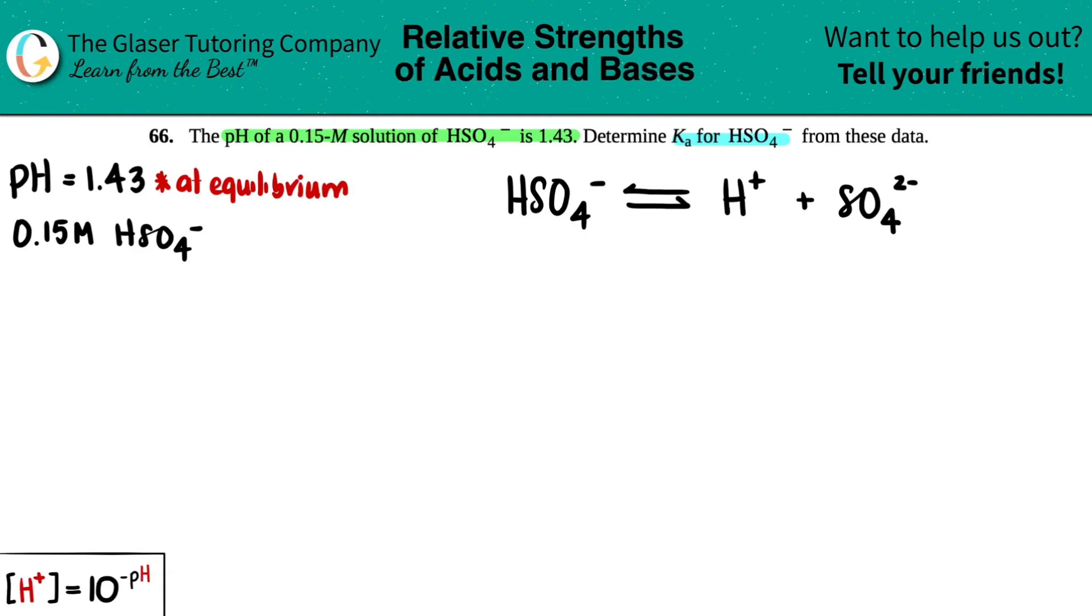They told us we had a 0.15 molar solution of HSO4. This is indicating that this is the only thing that we started with. This does not play any part in the actual dissociation of the two ions. The 0.15 molar is initial. This is initially what you started with, no ionization. Since they gave you an initial and equilibrium values of a weak acid, we need to do the ICE table.